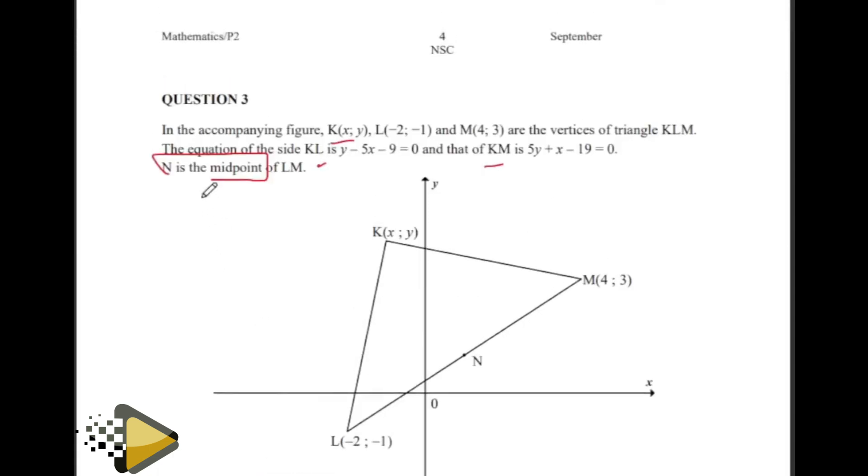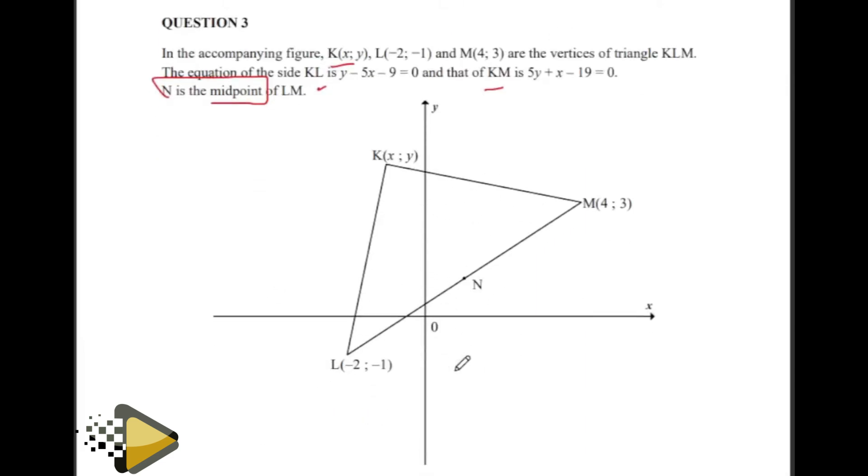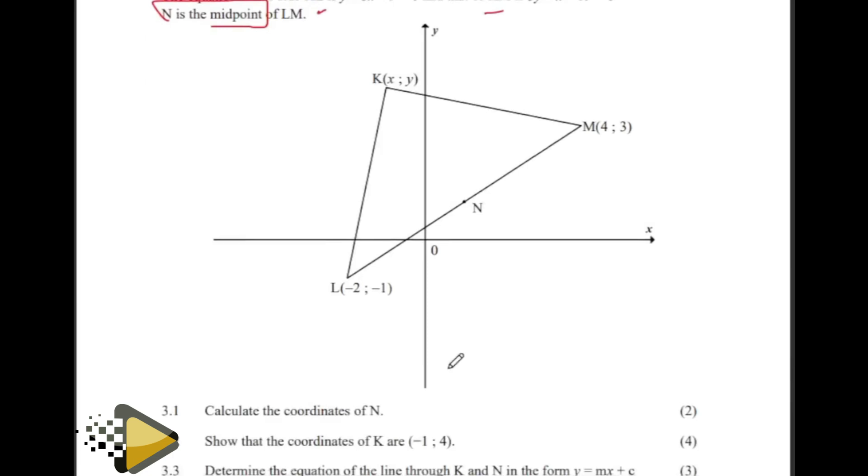All the information we have within the statements is recorded within the diagram. In cases where information you're given is not on the diagram, you need to indicate it as well. Then they ask for the coordinates of the midpoint. Remember the midpoint formula: X1 plus X2 divided by 2, and Y1 plus Y2 divided by 2, regardless of how you write it.